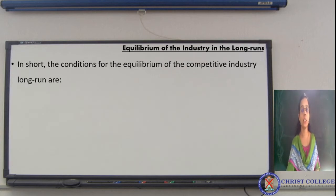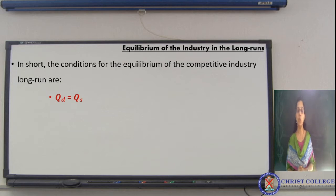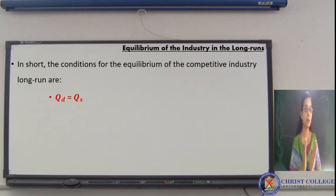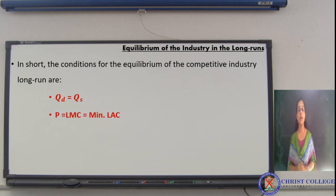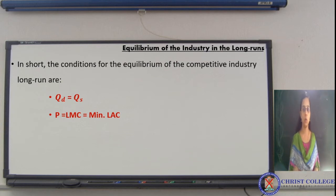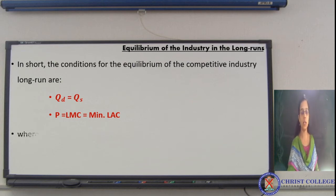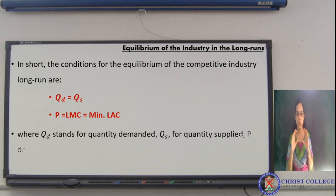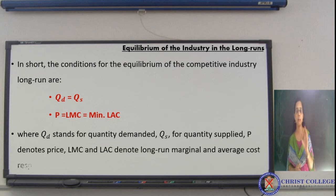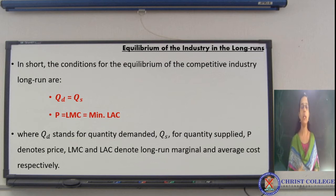These are the three conditions. To summarize: the first is QD equals QS, where QD is quantity demanded and QS is quantity supplied — demand-supply equality. The second is that price, long-run marginal cost, and the minimum point of long-run average cost should all be in equality. So price equals marginal cost equals average cost at equilibrium.